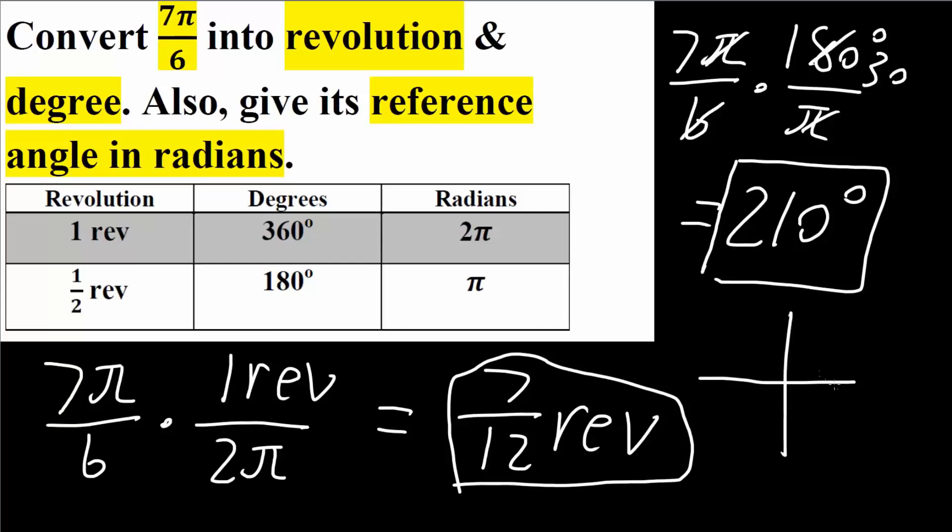We know π is here, so 7π over 6 is slightly past π, so it's going to be something like this. And the reference angle will be this angle right here. This is going to be our reference angle.